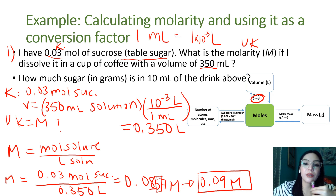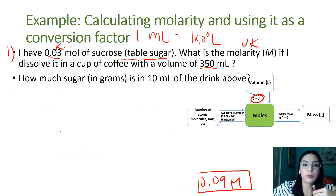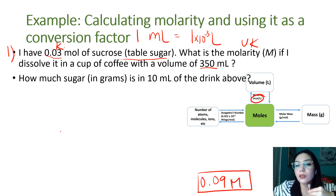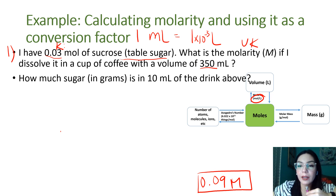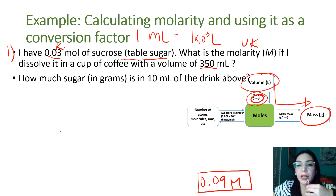The next part of the problem asks: how much sugar in grams is in 10 mL of the drink above? Looking at the mole map, we need to go from volume to mass. We start with the known volume and end up with the unknown mass. So we start with 10 mL and convert to liters: 0.01 liter.